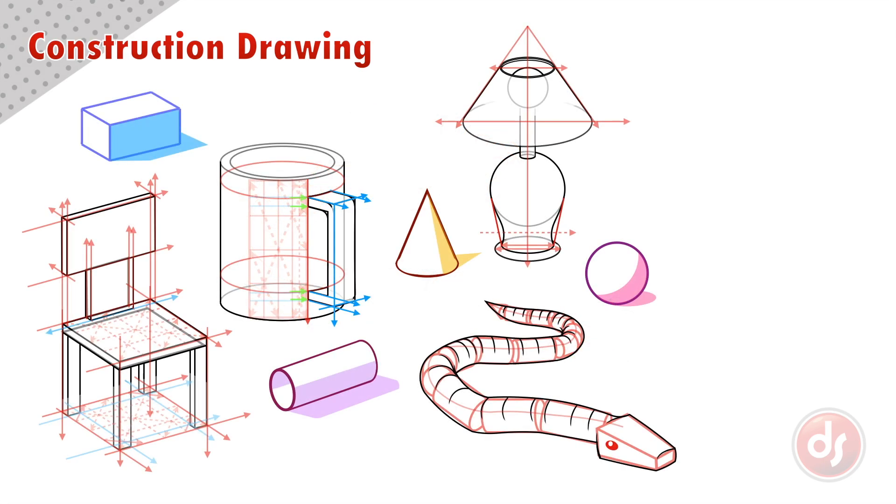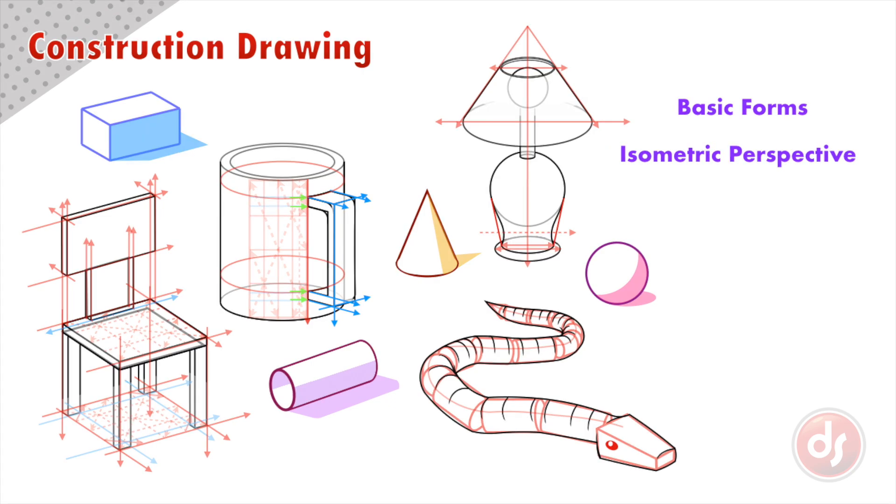In this lesson we started with basic forms, used isometric perspective, divided planes, cut and extruded forms, and made awesome complex three-dimensional objects. Try this on your own. Find simple objects around your house and do construction drawings of them. There's no single right answer on how to construct, but if you use all of these techniques you will be able to analyze and draw realistic and complex objects.